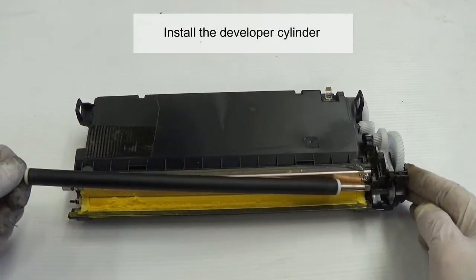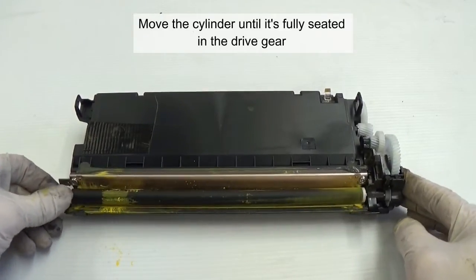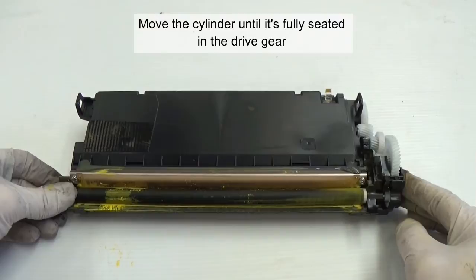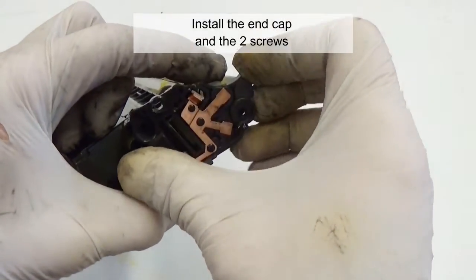Install the developer cylinder. Move the cylinder until it's fully seated in the driver gear. Install the end cap and the two screws.